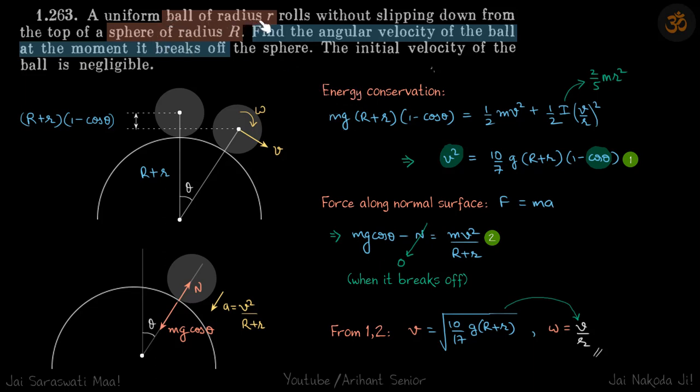We have a uniform ball of radius r that rolls without slipping down the top of a sphere of radius R. So this is the ball—it's going to roll down the sphere. Find the angular velocity of the ball at the moment it breaks off.